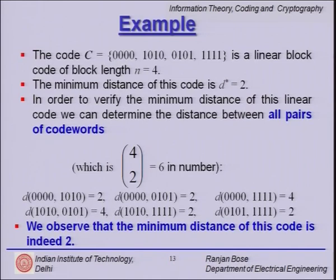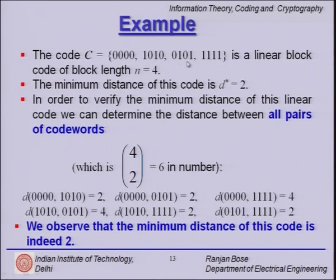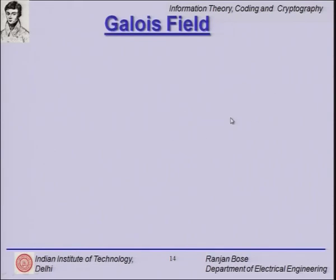If we do this exercise, we find that adding any two codewords gives another one of the four valid codewords. Thus we can declare that this code C is indeed a linear block code. The minimum distance of this code is 2 — taking all 4-choose-2 equals 6 pairs, the distances are 2, 2, 4, 4, 2, 2, and the minimum is 2. The minimum weight (excluding the all-zero codeword) is also 2, confirming d* equals w*.